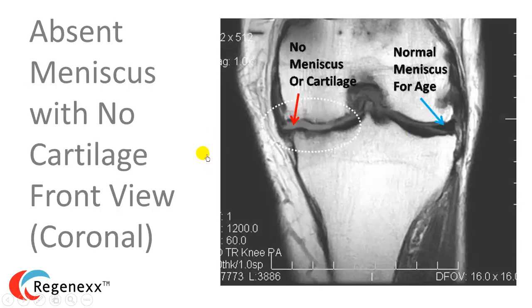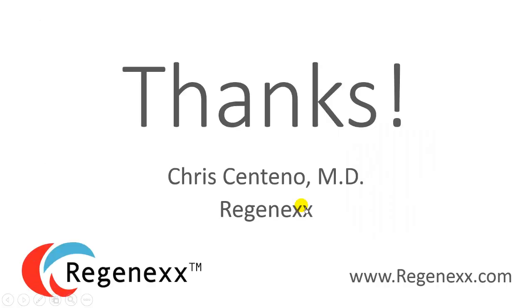An absent meniscus with no cartilage whatsoever — you can see the nice normal triangle on one side, while this one is completely gone. There is no meniscus there, and there is no cartilage either.